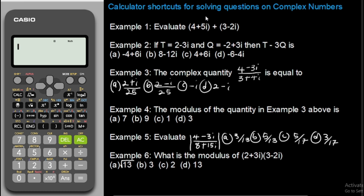First, complex numbers are numbers that comprise a real part and an imaginary part. For instance, 4 plus 5i is a complex number — 4, the part without i, is the real part, and 5i is the imaginary part. Every complex number will comprise a real part and an imaginary part. For example, 3 minus 2i also has a real part and an imaginary part.